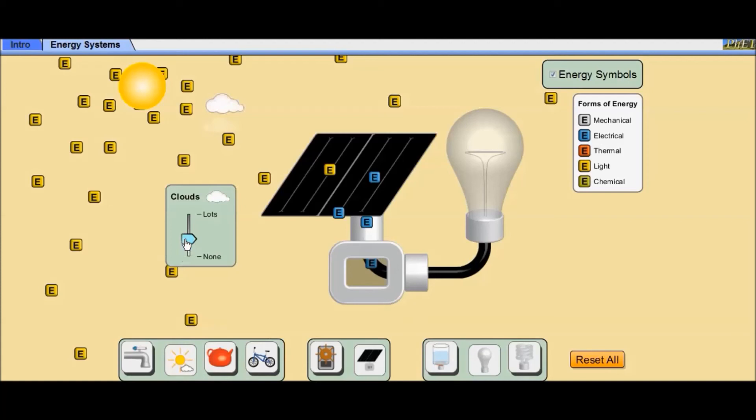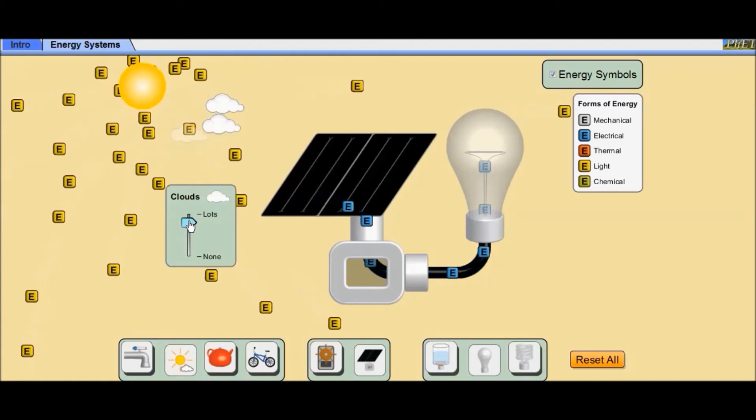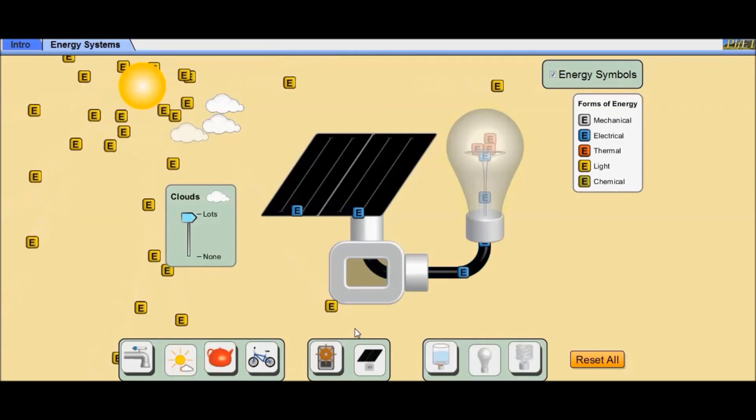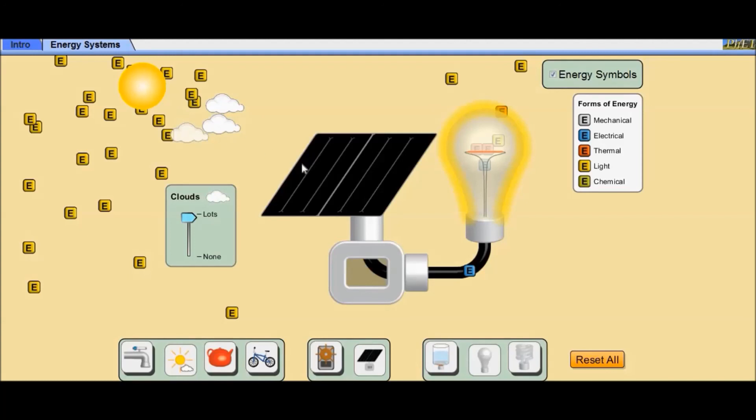If there are lots of clouds in the atmosphere, the light energy from the sun does not reach the solar panel. So no electrical energy is generated. As a result, we can see the light bulb does not glow.